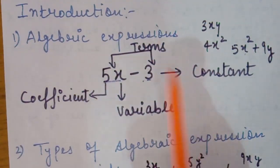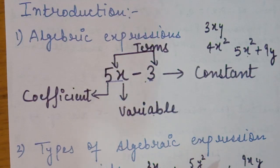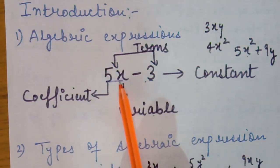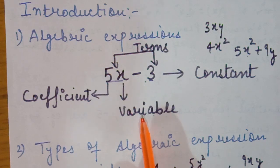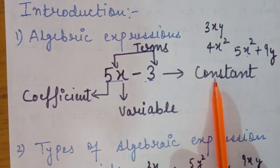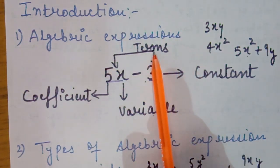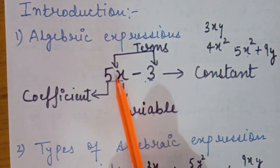In 8th class, we start with the introduction of algebraic expressions. Algebraic expressions are those expressions in which some variables and constants are connected with mathematical operations such as addition and subtraction. A simplest example of an algebraic expression is 5x minus 3. Here x is representing a variable. Variables are those terms whose value is not fixed — they change from situation to situation, question to question.